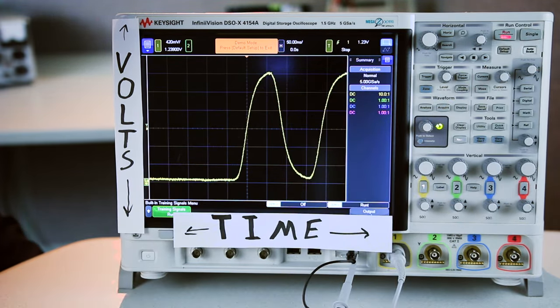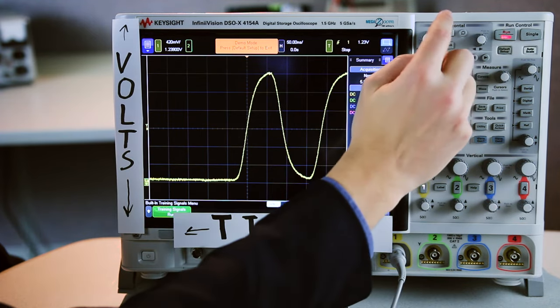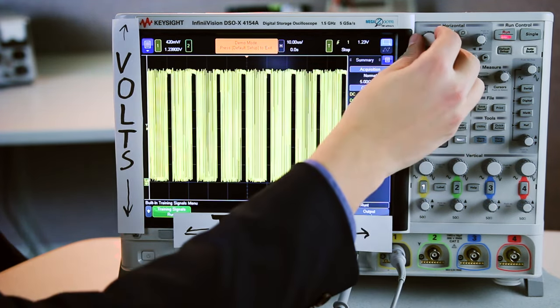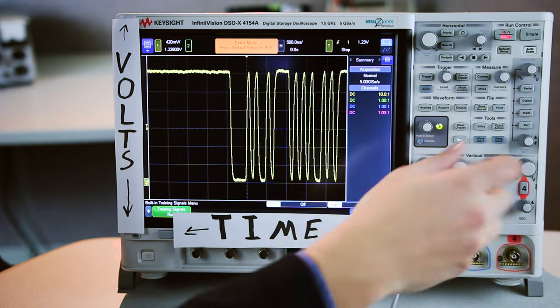So when you hit that button, you can see the signal stops. And if I zoom out a little bit using the horizontal knob from before, we can see that there's a lot of signal here and we're able to go around and look and see what's going on in our signal.